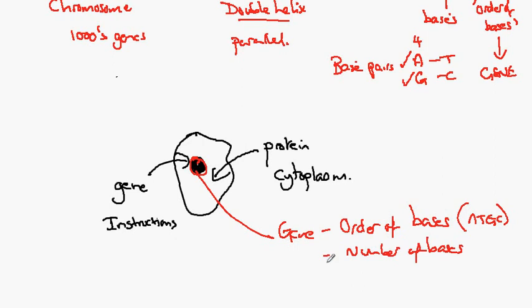And the number of the bases. And we know that somehow this codes for the construction of a protein in the cytoplasm. And we also know that somehow this gives us the characteristic.